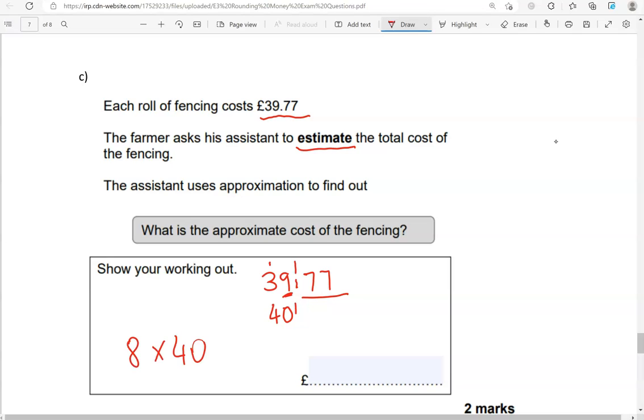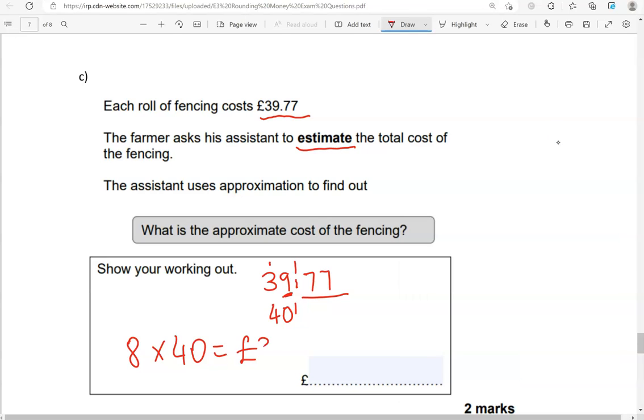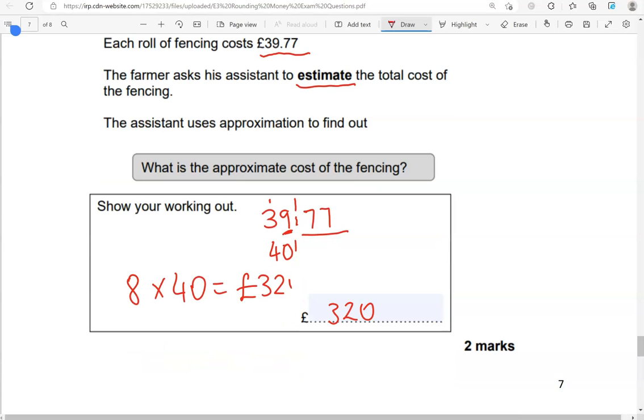So, this is about 40 pounds. And we're looking at 8 rolls. So, 8 times 40 is 320. So, £320 is the approximate cost.